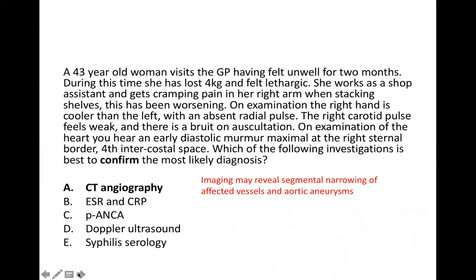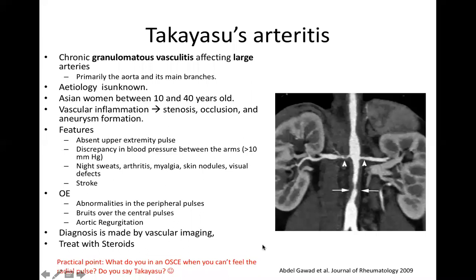On examination in Takayasu's, you can get absent upper extremity pulses and discrepancy in blood pressure, as well as constitutional symptoms including night sweats and arthritis. A stroke can occur if there's stenosis of a cerebral artery. Examination findings include abnormalities in peripheral pulses, bruits over central vessels, and aortic regurgitation. Because it's a vasculitis, vascular imaging such as CT angiography is helpful. Steroids are the usual treatment.